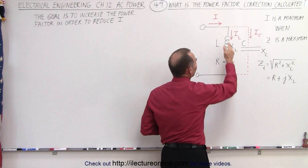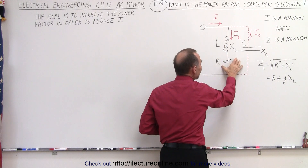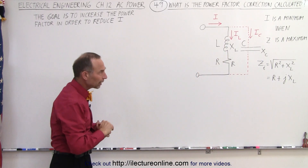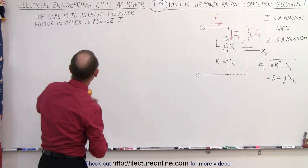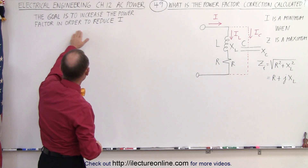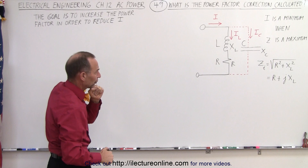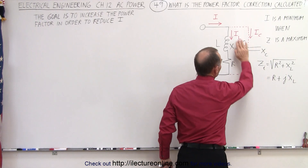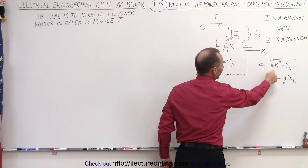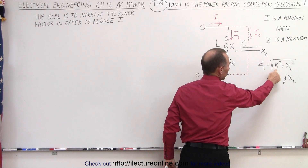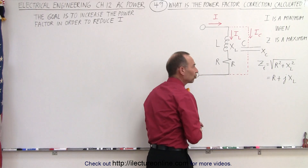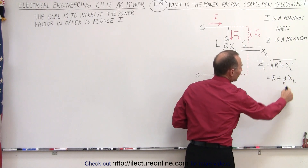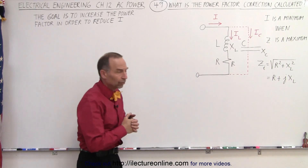That means we will have the least amount of current provided and yet deliver the correct amount of power to the load. The goal is to increase the power factor in order to reduce the current. The original impedance of the circuit before adding the capacitor is simply equal to the square root of R squared plus the inductive reactance squared, or written as R plus j times the inductive reactance.